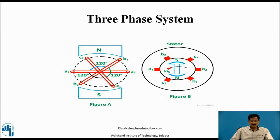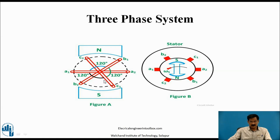In figure A, you will find three conductors: A1, A2 (conductor 1); B1, B2 (conductor 2); and C1, C2 (conductor 3). Look at this carefully — all three are displaced by 120 degrees.